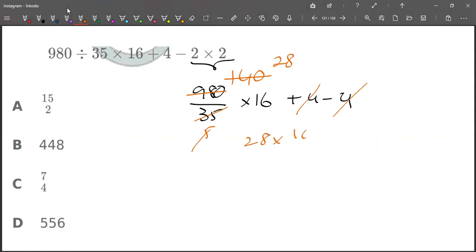So 28 into 16: 16, 8, 128, 16, 2, 32 to 44, 4, 48.